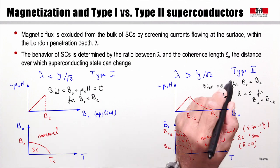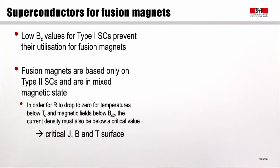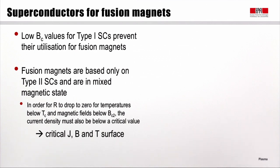That defines type 2 superconductivity. The values of BC for type 1 superconductors are far too small for fusion magnets, so fusion magnets in practice are based only on type 2 superconductors. Additionally, the current density must also be below a critical value JC. So there is a defining surface in the J, B, and T graph that limits the superconducting property.